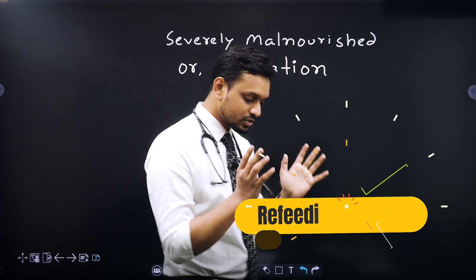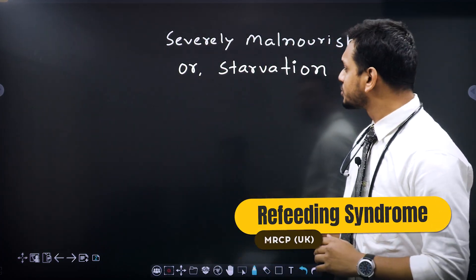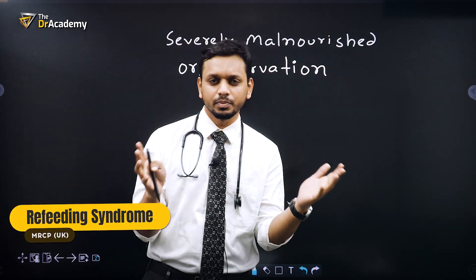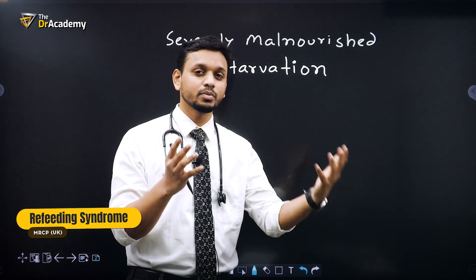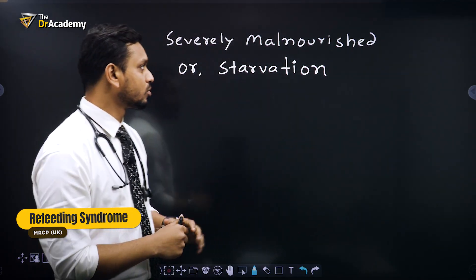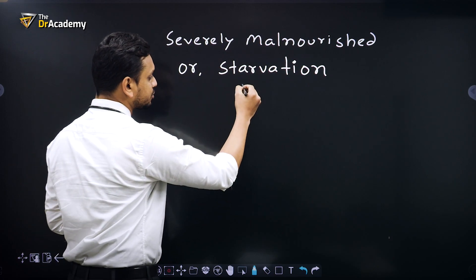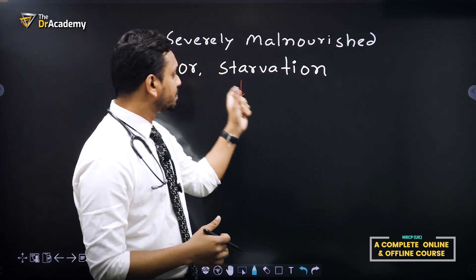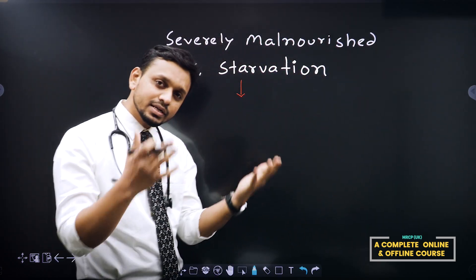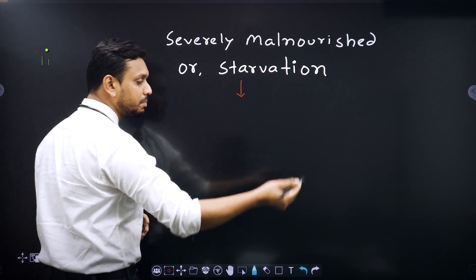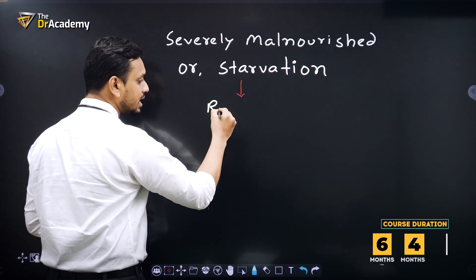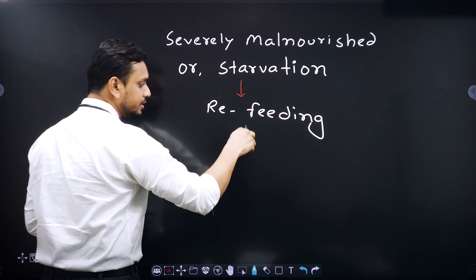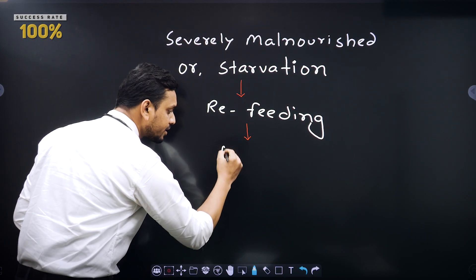What is actually the refeeding syndrome? So refeeding syndrome occurs when the patient has been severely malnourished, or otherwise the patient is on starvation for a long period of time. So the definition is that we have a patient for a long period of time who is severely malnourished, or the patient is on starvation. After that, if we reintroduce the patient with new feed — that is, we reintroduce feeding — refeeding syndrome is the condition where the patient has got a metabolic abnormality.